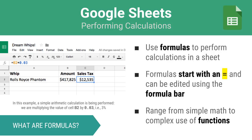Google Sheets has a formula bar that you can use for this purpose. To write a formula, simply start with an equal sign and enter in an expression. The formulas you build can be anything from simple arithmetic operations like addition, subtraction, and multiplication, to complex ones built using statistical and engineering functions. With the right knowledge, you can do powerful things within a spreadsheet.